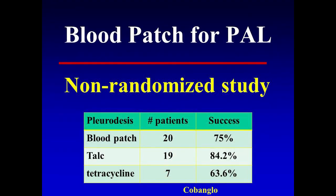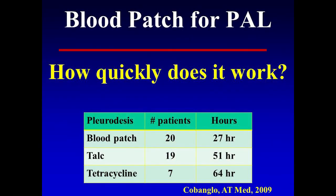One institution compared different methods for prolonged air leaks: 20 patients had a blood patch with 75% success; talc was used in 19 patients with 84% success, though talc is now a bad word associated with cancer and used mainly in patients with short life expectancy; tetracycline — doxycycline isn't available anymore and hurts a lot. Looking at speed of resolution: blood patches averaged 27 hours to seal, talc took 51 hours, and tetracycline took 64 hours. So the blood patch works reasonably quickly.